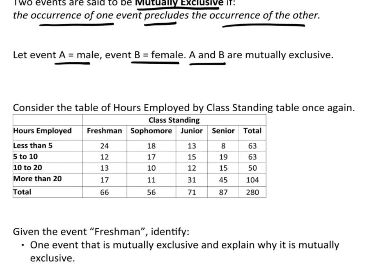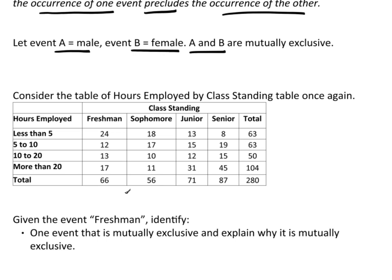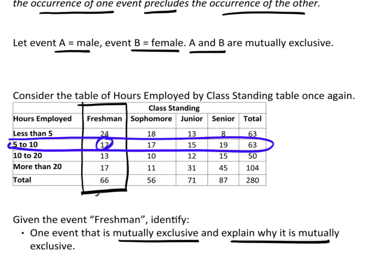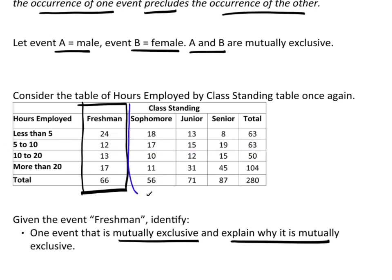Let's apply this idea to this table of class standing and employment. I want to consider the event freshman and identify at least one event that is mutually exclusive and explain why. If we look at the event 'observe a freshman,' it's right here. If I were to use, say, 5 to 10 hours, that would be right here — they share a 12. So freshmen and 5 to 10 can happen at the same time.